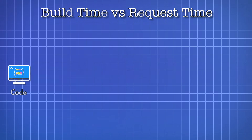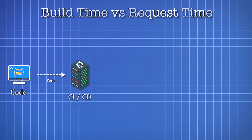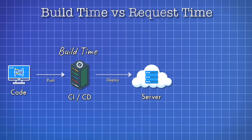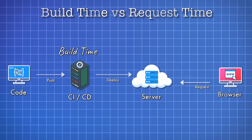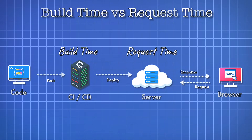Before we dissect these terms, it's important to understand the difference between build time and request time. Before our code can be deployed to a server, we need to run next build. Things that occur during the act of building our application with next build are what we call build time activities. After we deploy our application to a hosting provider, our built code executing on a server can start servicing requests. Things that occur during the act of responding to a request is what we call request time activities.